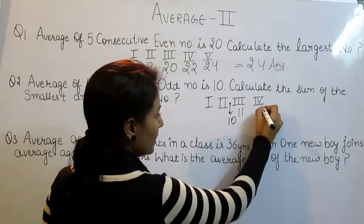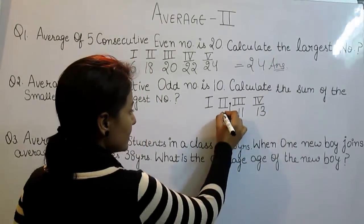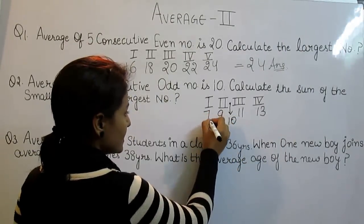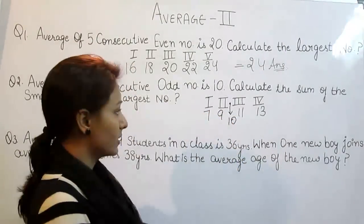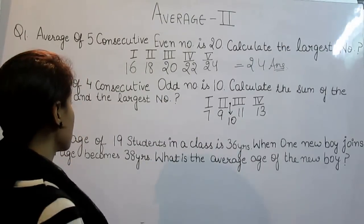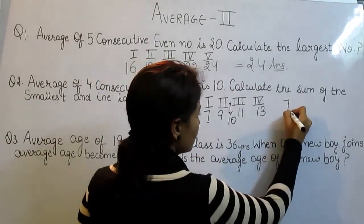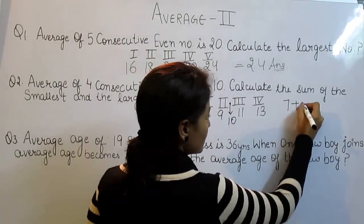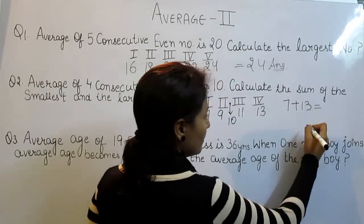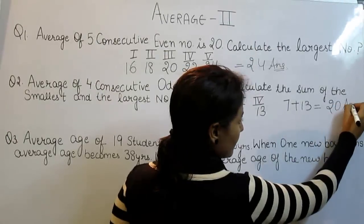After 11 would be 13. Before 10, the odd number is 9. And before 9, the odd number is 7. We have to calculate the sum of the smallest and the largest number. The smallest is 7, and 13 is the largest number. When we sum both numbers, we get 20 as the answer.